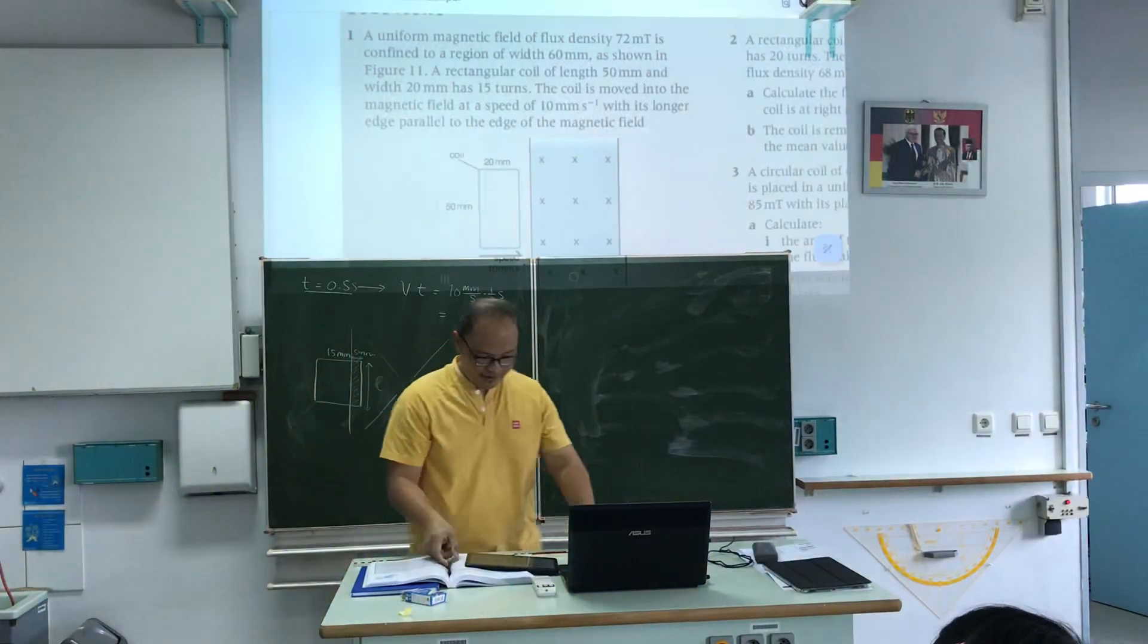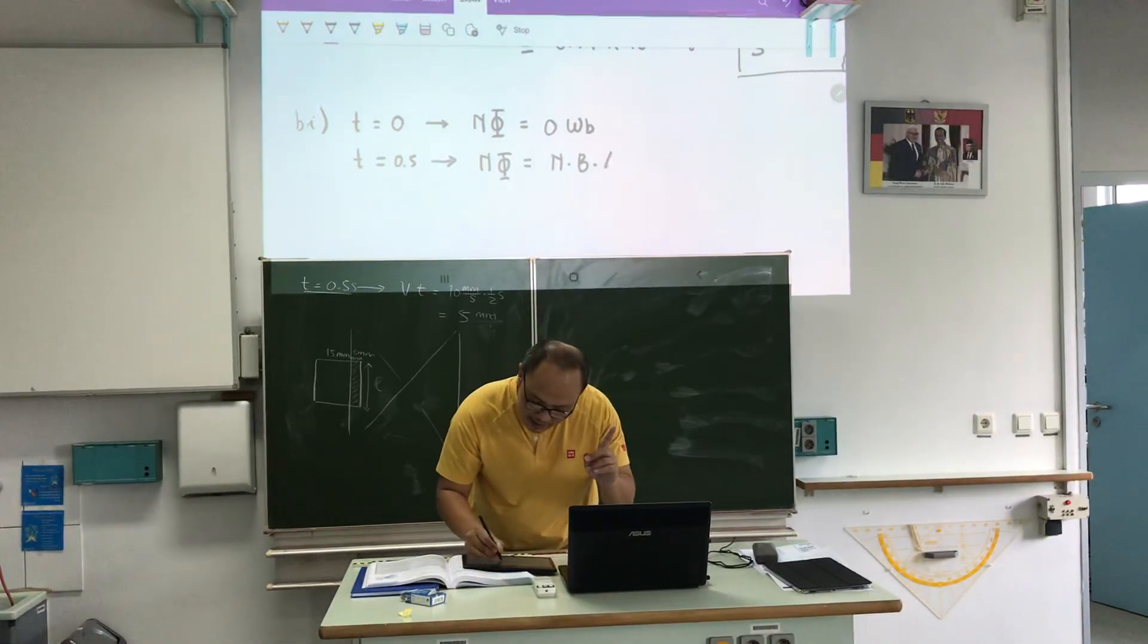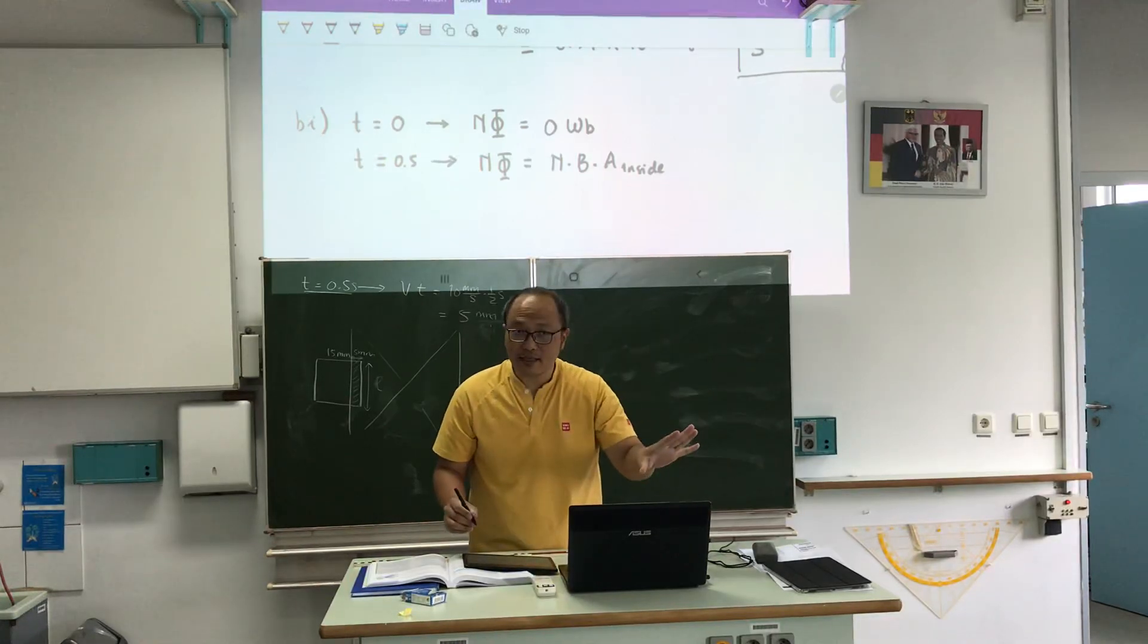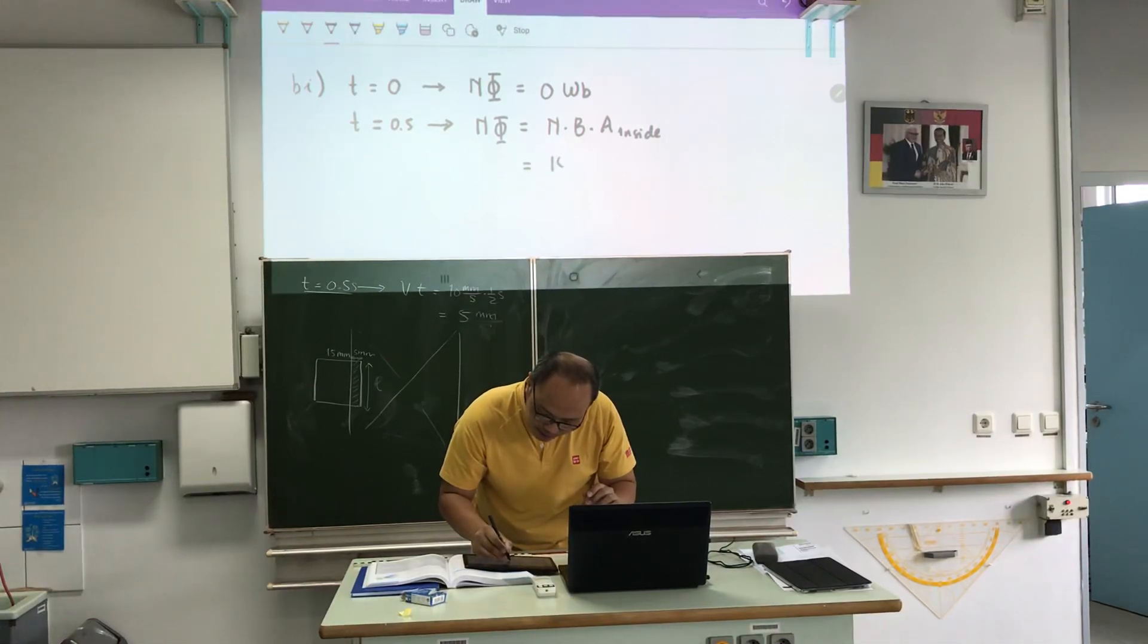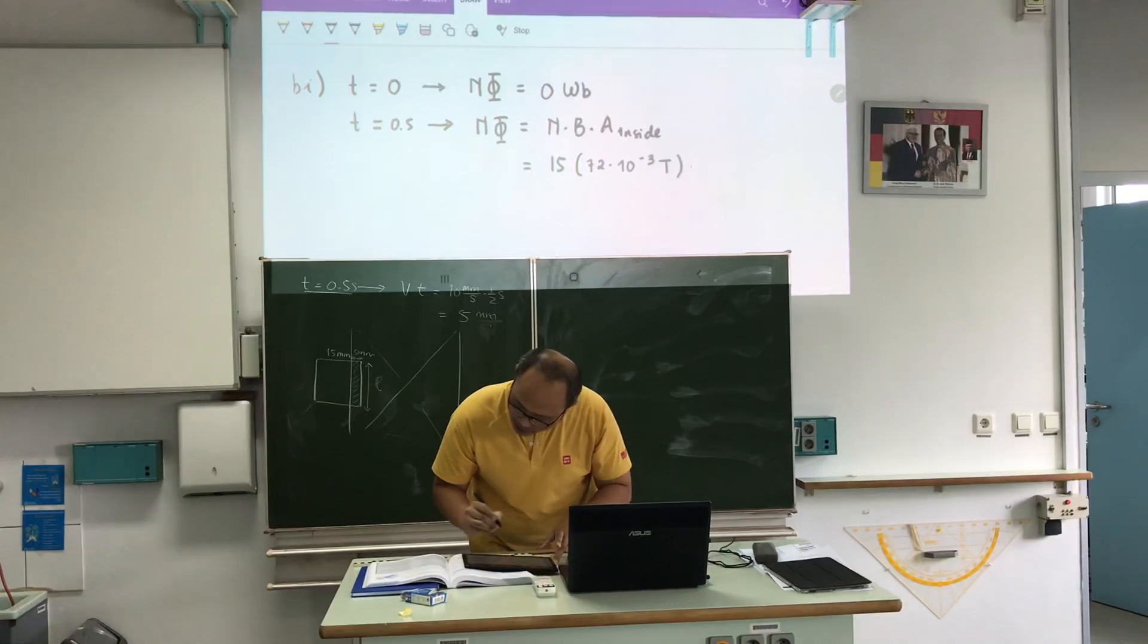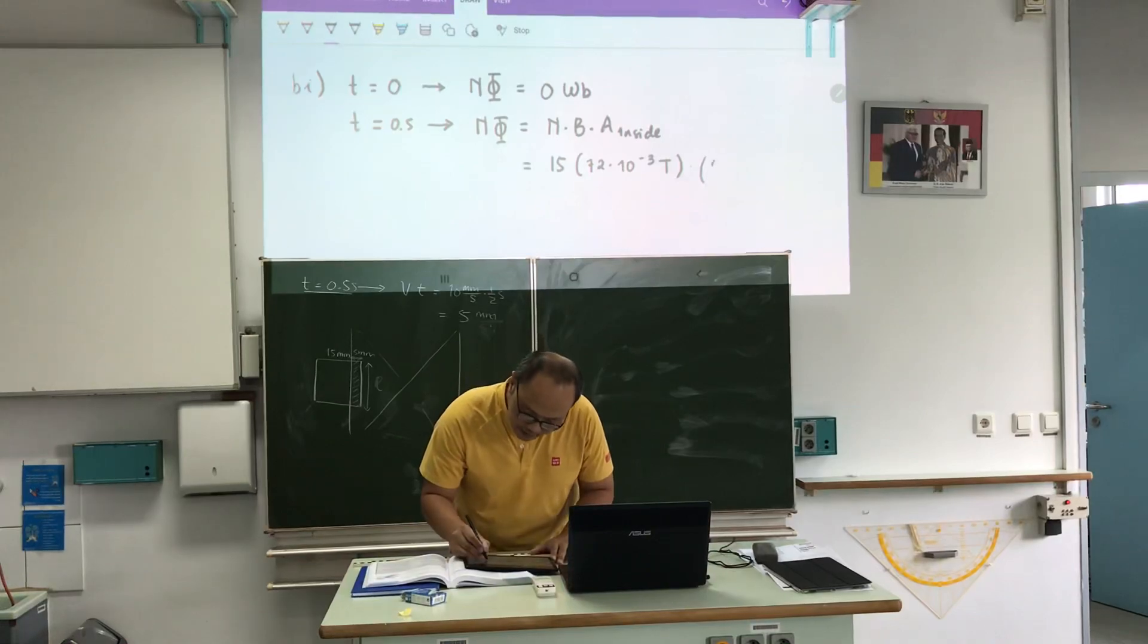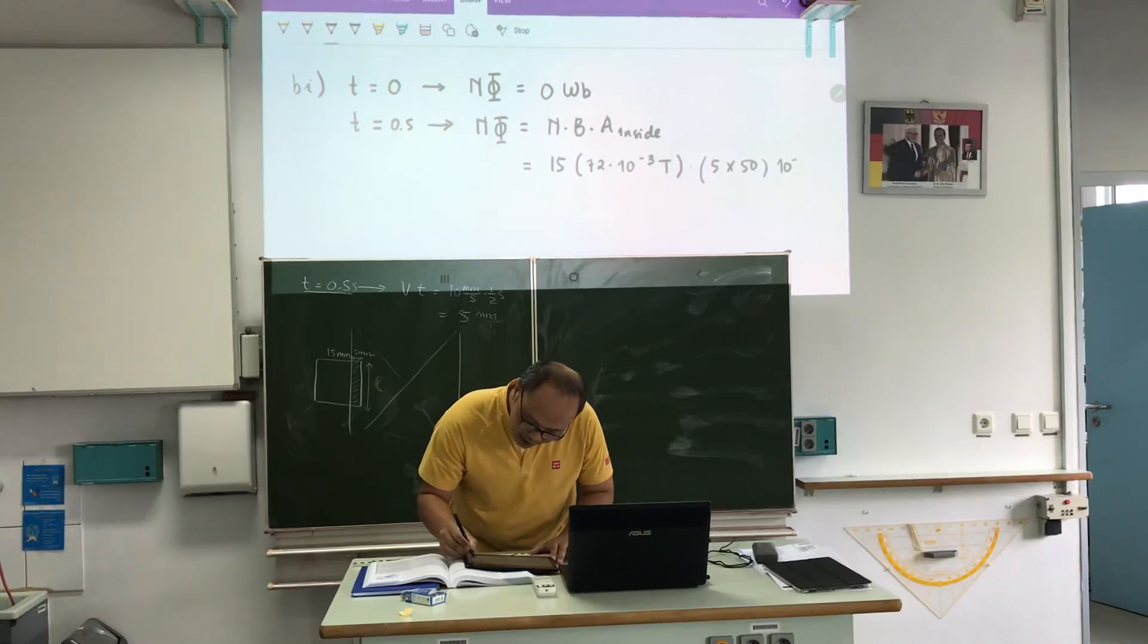Let's do it. N B A inside. Can I say inside? Yes. And B, whatever inside the field now. So now, the N is 15 turns times B, 72, times A. Be careful, 5 millimeter times 50 millimeter. But then I change it into meter squared.